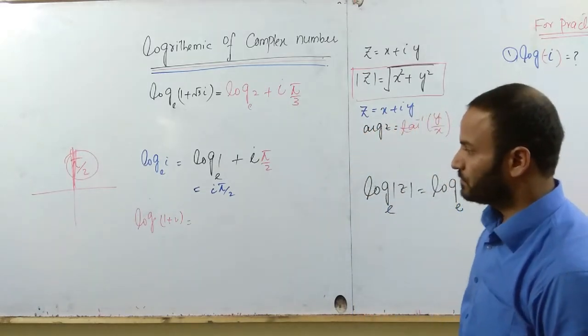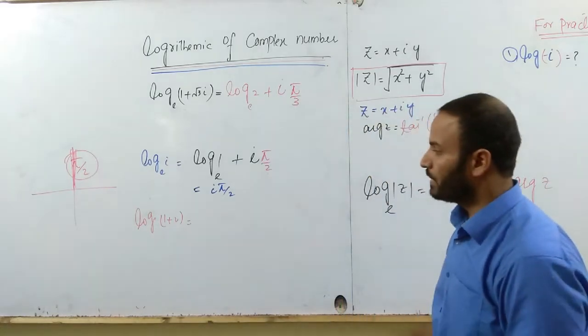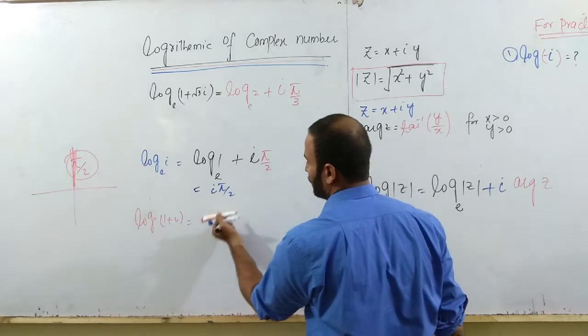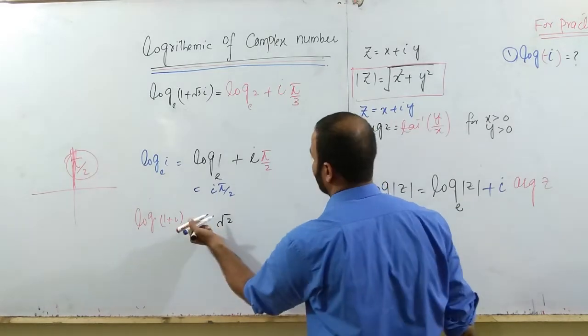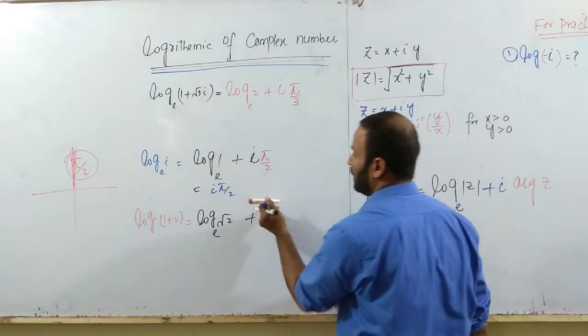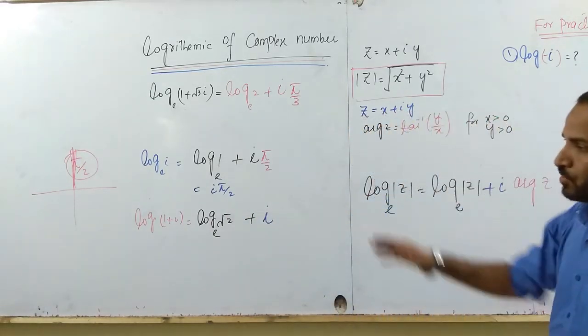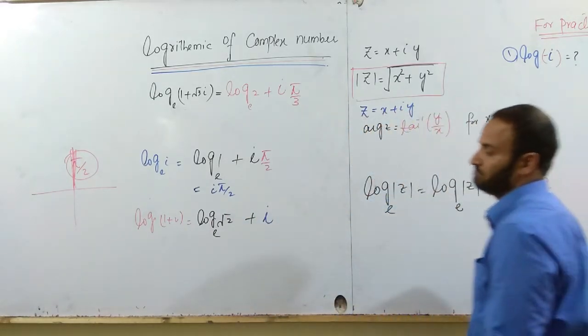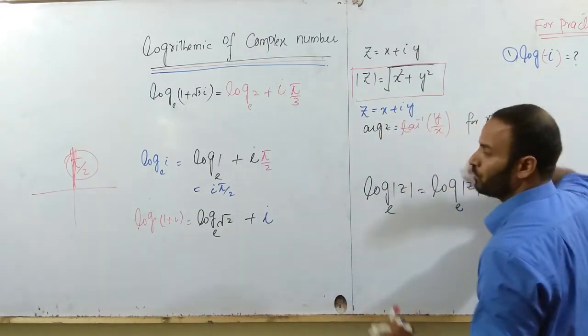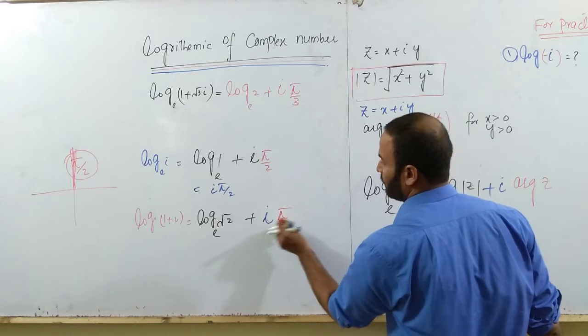Next, what is the log of 1 plus iota? Again, what is the magnitude of this complex number? That is square root 2. You have to take the log of the magnitude plus iota. And what is the argument of 1 plus iota? According to this definition, that is pi by 4.